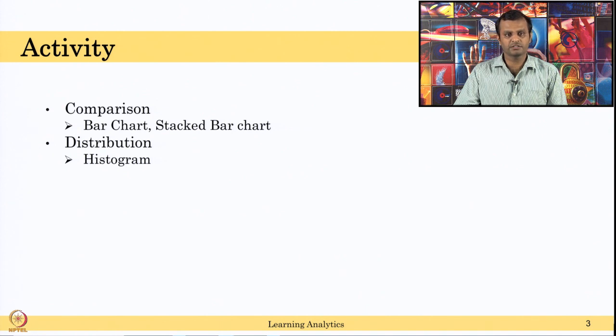Also, you can show distribution using scatter plot. Histogram is good. Or line chart - you can show the distribution using line chart and histogram combined, or box plot.